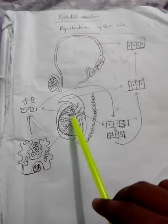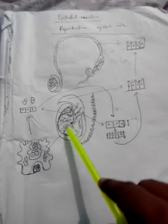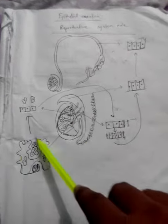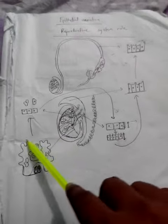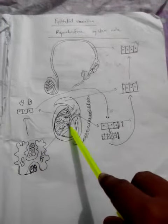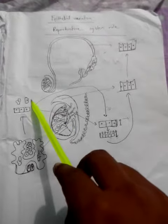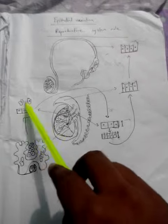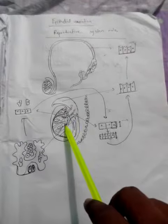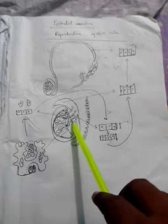The testes are shown in cross-section. This branch includes sub-components — the rete testis, then the straight tubules, and then ultimately the efferent ductules — starting with the proximal part.